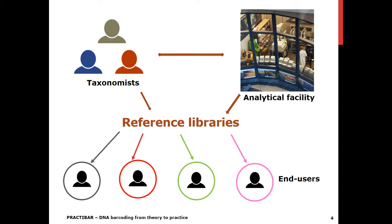A reference library consists of DNA barcodes linked to biological specimens which are stored in public institutions — specimens that were previously identified based on morphological characters by taxonomists. To build a reference library, you need to have specimens first, and then you need a group of taxonomists to put species names on those specimens.